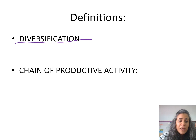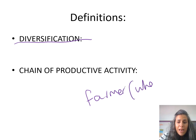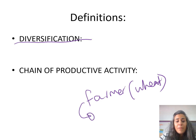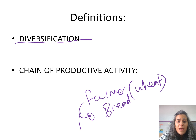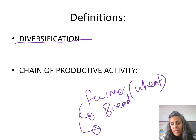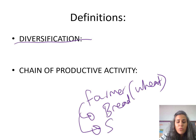For example, consider a farmer planting wheat, who integrates with a factory manufacturing bread. That bread-making or bakery then integrates with a supermarket in order to sell the end product.